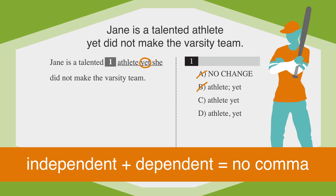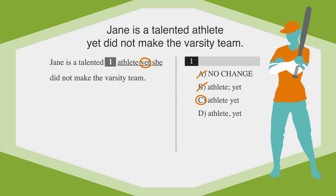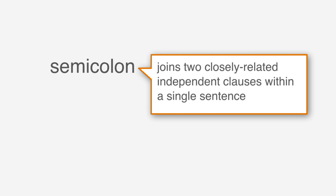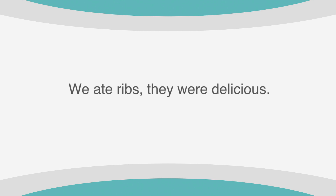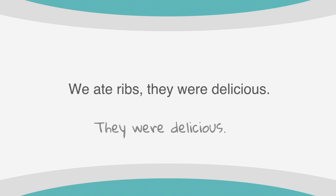Alright, we've got clauses and FANBOYS down, so let's shift gears and look at semicolons. The semicolon joins two closely related independent clauses within a single sentence. For example: 'we ate ribs, they were delicious.' 'We ate ribs' is an independent clause, and 'they were delicious' is also an independent clause. We can't use a comma to join two independent clauses, but if we replace the comma with a semicolon, it reads: 'we ate ribs; they were delicious.' Now we have two independent clauses correctly joined by a semicolon.